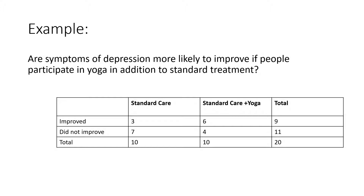The example that we're going to use — we're going to look to see if symptoms of depression are more likely to improve if people participate in yoga in addition to standard treatment. We have data from 10 subjects who were randomly assigned to either standard care or standard care plus yoga. Those who had standard care: 3 out of 10 improved. Those who had standard care plus yoga: 6 out of 10 improved.